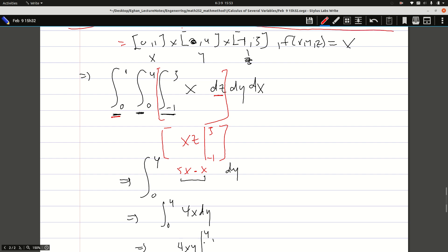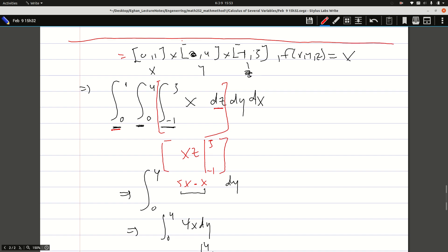If I should interchange this to any of the other orderings—y, x, z or z, x, y or y, z, x or x, z, y—whatever form I take, I'm expected to get the answer as 8. You can try the other possible orderings.